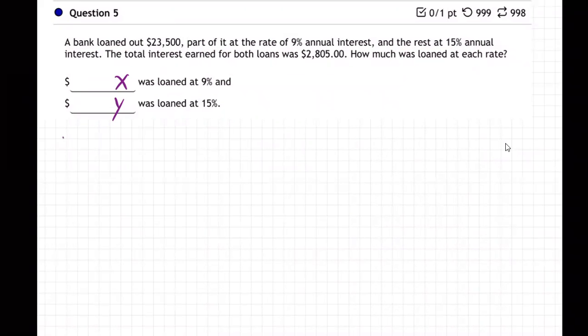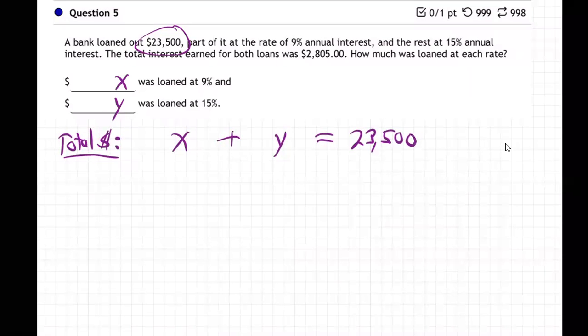First one is just total dollars. So in other words, the amount at 9% plus the amount at 15% must equal $23,500, because that's the total dollars we have. And then there's also the interest equation.